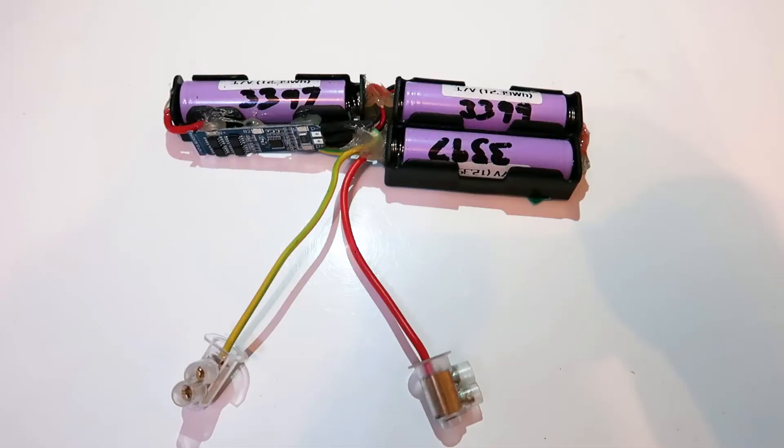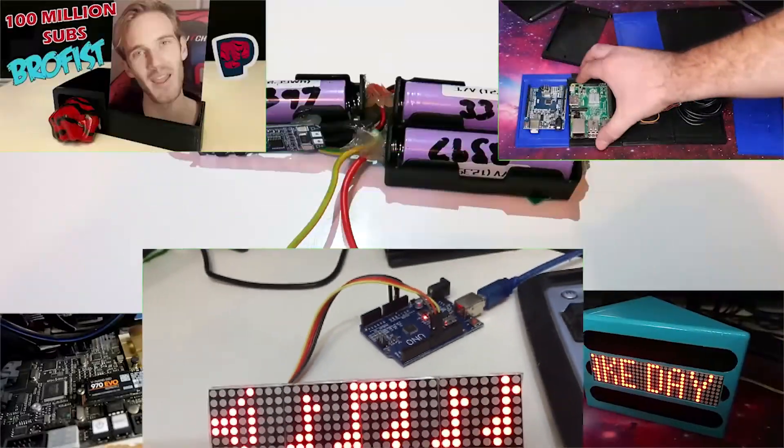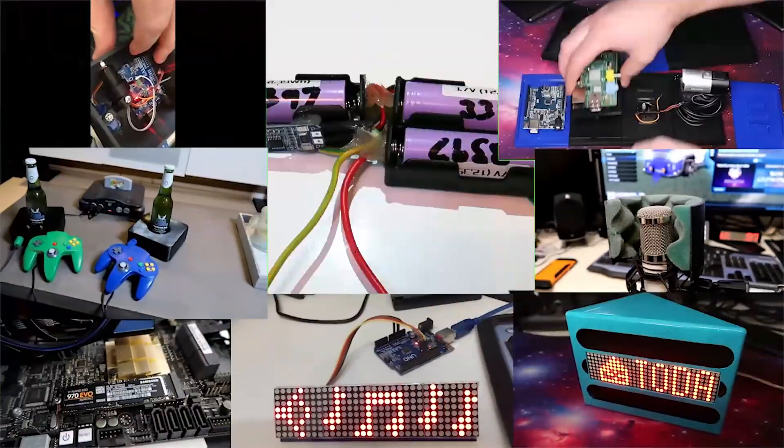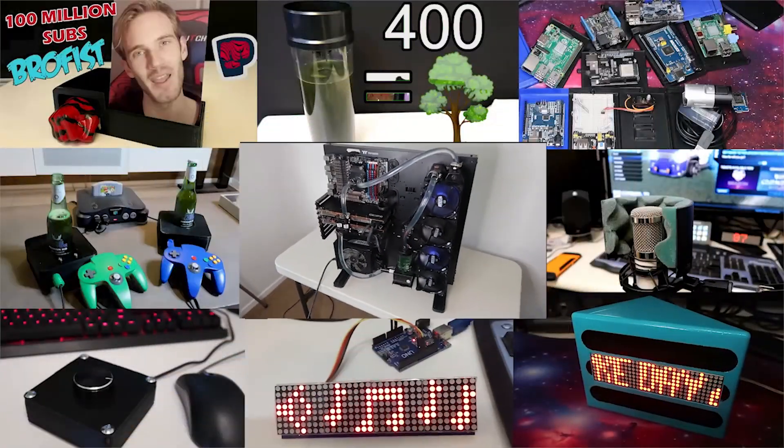So that's how we make a 3S 18650 battery pack, which is 12 volts. Hopefully this video helped if any of you are having issues trying to put these packs together. Let me know if you want to see similar videos to this. Make sure you like and subscribe to keep up to date with projects like this. It also helps my channel out a lot, so thank you very much. And thanks again for watching, and we'll see you next time.